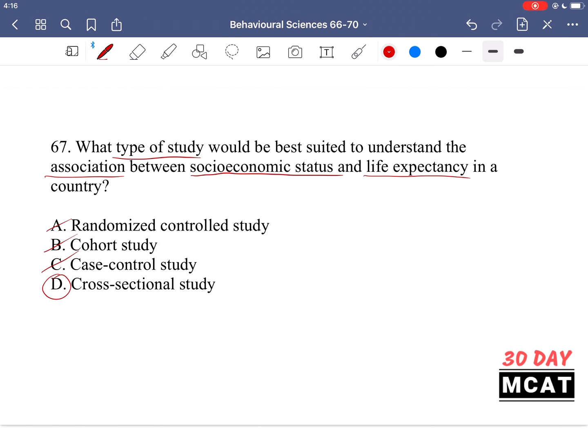This gives us a wide range of socioeconomic status that we're looking at and a wide range of results we get in terms of life expectancy and health outcomes as well. And then we can compile this data together and draw an association between the two.